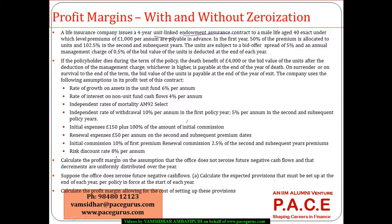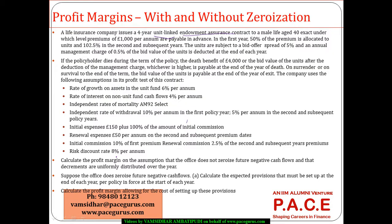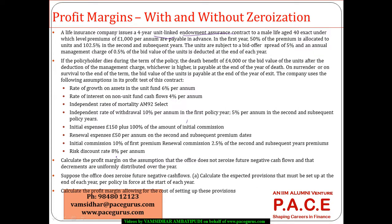If the policyholder dies during the term of the policy, the death benefit is 4000 or the bid value of the units after deduction of the management charge, whichever is higher, payable at the end of the year of death. On surrender or survival to the end of the term, the bid value of the units is payable at the end of the year of exit.